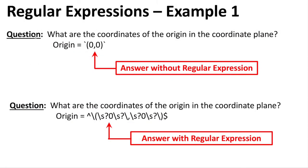Here is an example to look at. The question says: what are the coordinates of the origin in the coordinate plane? This is what the answer would look like in Canvas — it would be parentheses zero comma zero in parentheses — but if a student were to put a space anywhere in there, it would be marked wrong.